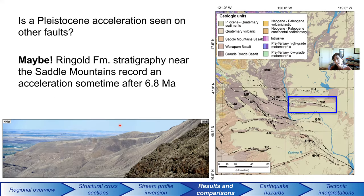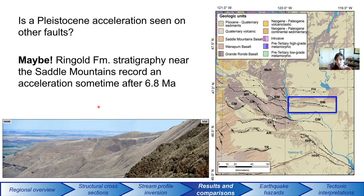We're seeing this Pliocene-to-Pleistocene rate increase in the Yakima Canyon region, but is this a localized event or more widespread? I think it may actually be more widespread. We've done another analysis over in the Saddle Mountains anticline, and from deformation of the Saddle Mountains anticline and what we can read from the Ringgold strata — which are growth strata in this region — it seems to suggest there was an acceleration in deformation rate sometime after 6.8 million years.